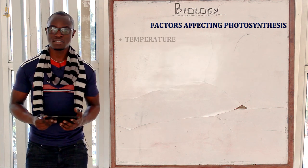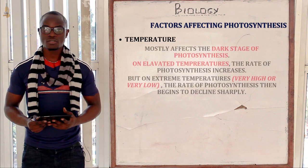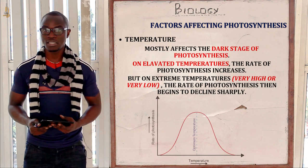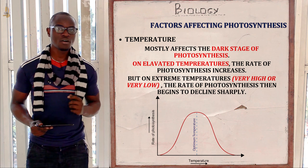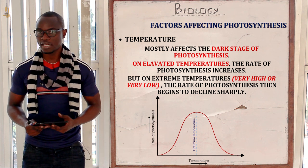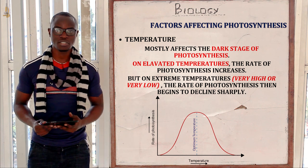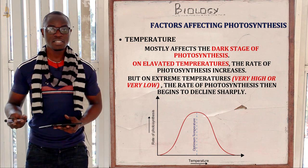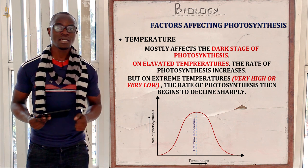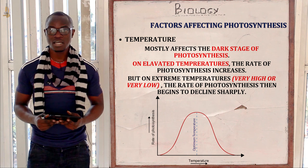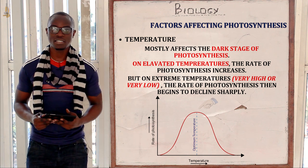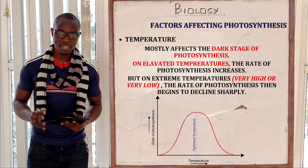The next factor is temperature. The higher the temperature, the higher the rate of photosynthesis, but temperature only affects the dark stage of photosynthesis and not the light stage. At elevated temperatures, the rate of photosynthesis will increase up to a certain point and then start to decrease until it declines completely.